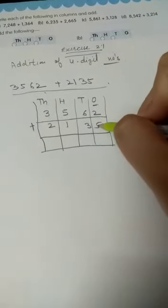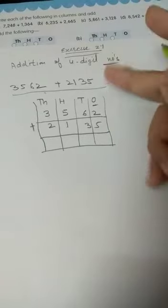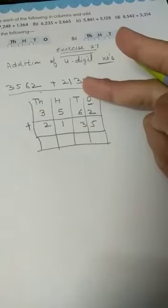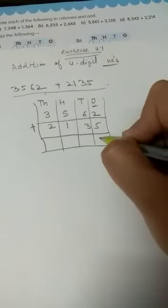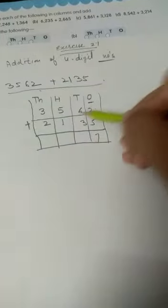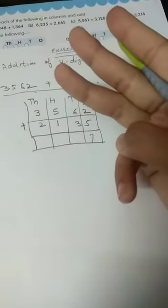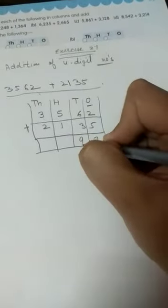Start from here. 2 plus 5. Keep 1 number in your mind. 5 is in my mind. Open your 2 fingers. What was in my mind? 5. The next number is 6 and 7. So what should come here? 7. 6 plus 3. Keep 6 in your mind. Open your 3 fingers. What was in my mind? 6, 7, 8, 9. So what will come here? 9.